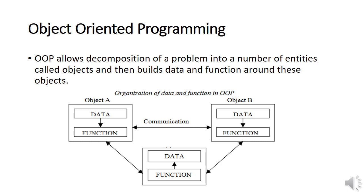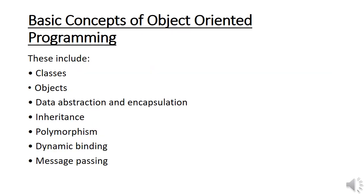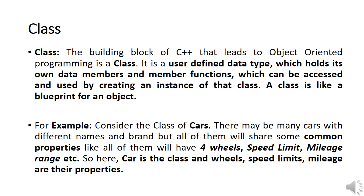Next we will discuss the basic concepts of object-oriented programming. There are mainly seven basic concepts: the first is class, second is object, third is data abstraction and encapsulation, fourth is inheritance, fifth is polymorphism, sixth is dynamic binding, and the seventh is message passing. We will see each one in detail with examples.